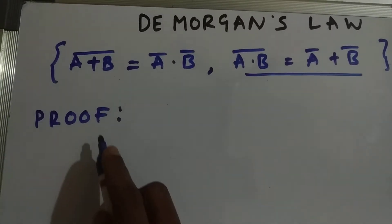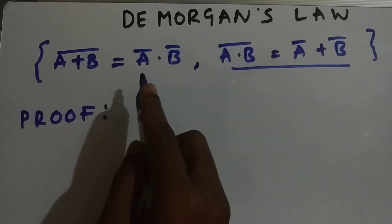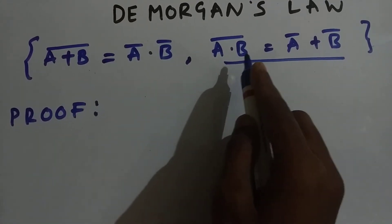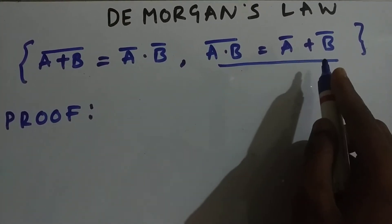De Morgan's law states that A plus B whole bar equals to A bar dot B bar, and A dot B whole complement equals to A complement plus B complement.